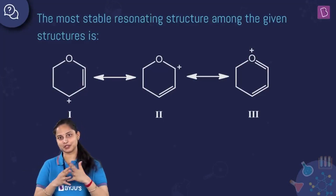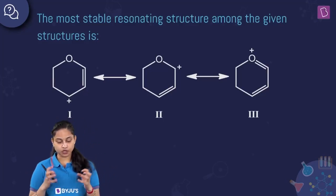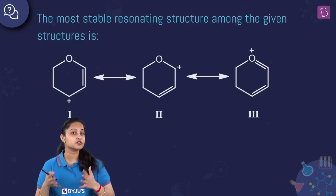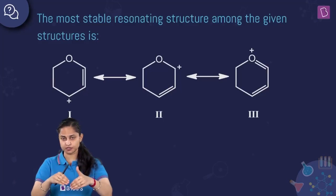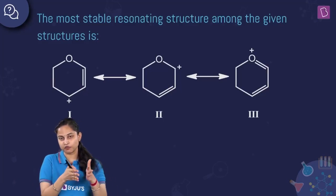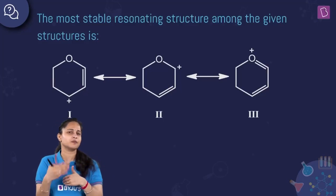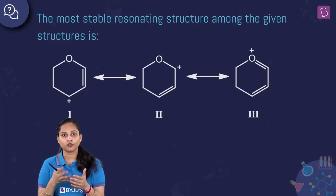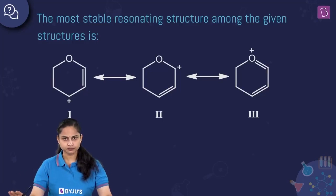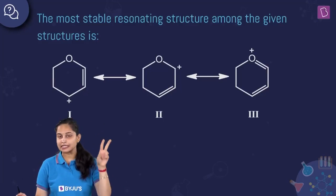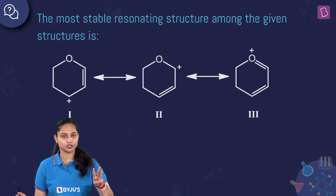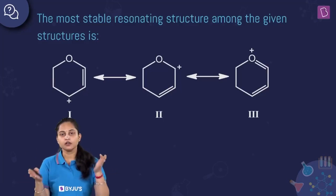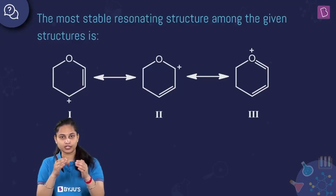For a structure to be the most stable resonating structure, the conditions are: first, the compound should be neutral; second, if not neutral, it must possess the maximum number of covalent bonds (maximum covalent bonds means maximum stability, as maximum atoms will have their octet complete); third, the structure should have the minimum number of formal charges.